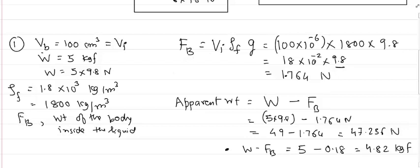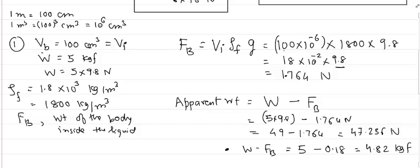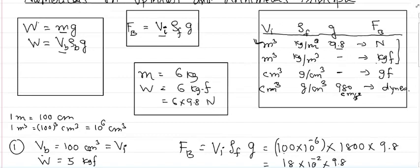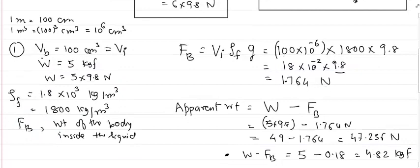Upthrust FB = VI × ρF × g. Volume is 100 cm³, converted to 100 × 10⁻⁶ meter cube, since 1 cm³ = 10⁻⁶ m³. Density of fluid is 800, and g = 9.8. This gives 1.764 Newton. If the answer is required in kgf, don't multiply by 9.8 — you get 0.18 kgf.